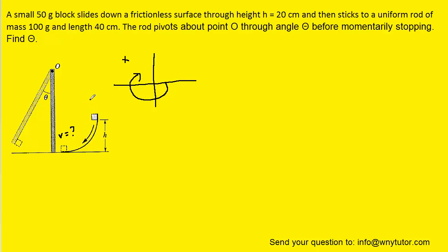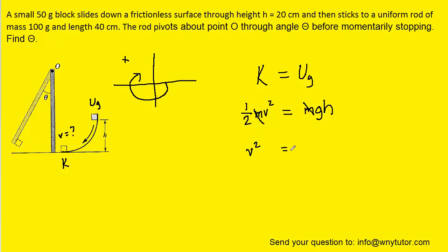Note that initially the only energy present is the gravitational potential energy, and then once it slides down the ramp, all of that energy will be converted into kinetic energy, so we'll set those two energies equal to each other. For the kinetic energy, we can use one-half times mass times speed squared, and the gravitational potential energy will be mass times g times the height. Mass appears on both sides of the equation so we can cancel it, then multiply both sides by two and take the square root to isolate the final speed. We can plug in 9.8 for g as well as the initial height — just make sure you convert that into meters. This expression becomes the speed of the block once it reaches the bottom of the surface, which completes phase one. We can note that speed is the square root of 2gh.